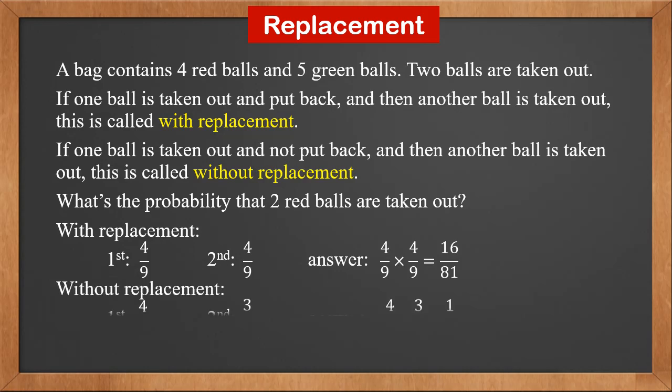If it's without replacement, then for the first ball, the probability of red is also four over nine. If a red ball is taken out and not put back, then there are eight balls left in the bag, and three of them are red. So the probability that the second ball is red becomes three over eight. Therefore, the answer is four over nine times three over eight, which is one over six.